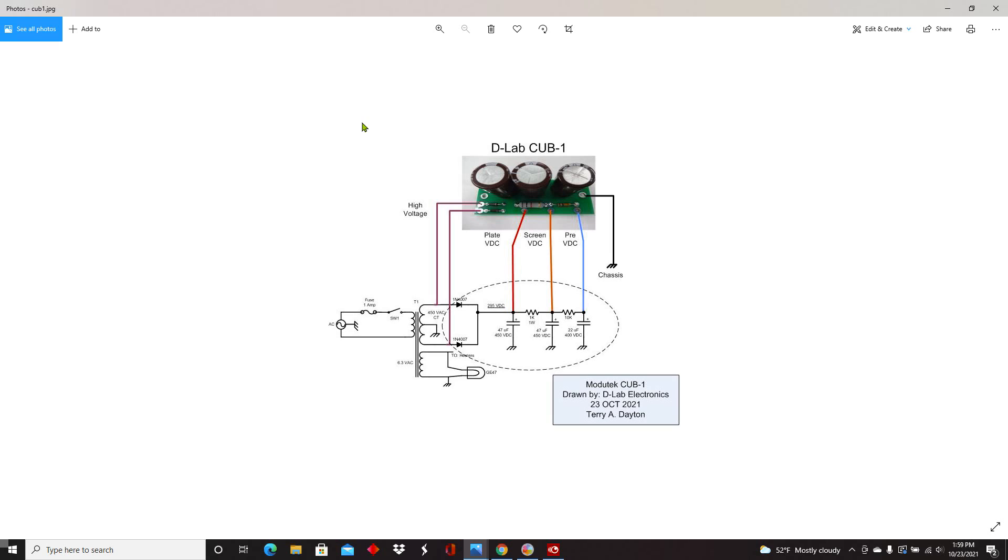So here is a simplified diagram of the D-Lab Cub1 board and the functions that it provides. If you take a look below, you'll see a standard power supply circuit that you would use in, say, a practice guitar amp. So you've got your main power transformer. It's got a high voltage winding and a filament winding. Your high voltage winding, in this case, is being rectified by a pair of diodes. Then it goes to the various caps and resistors that you select for the circuit that you're building. The Cub1 integrates all the components that you see in this oval.